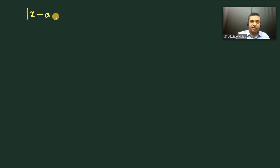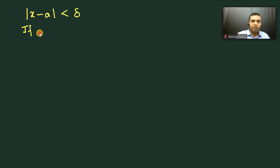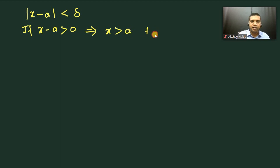Now let us consider the inequality: modulus of x minus a less than delta. Again two cases. When x minus a is greater than 0, which implies x is greater than a, we get x minus a less than delta, which implies x is less than a plus delta.